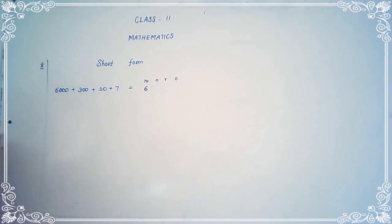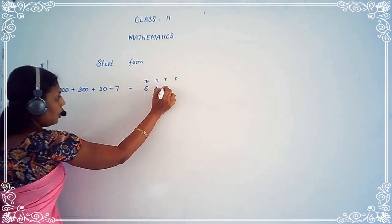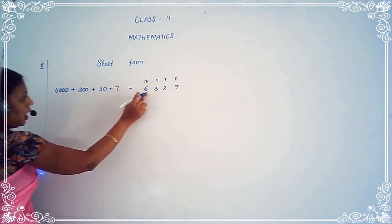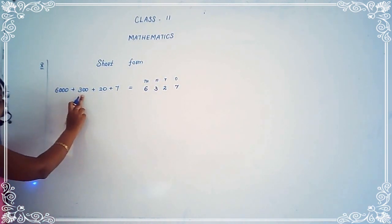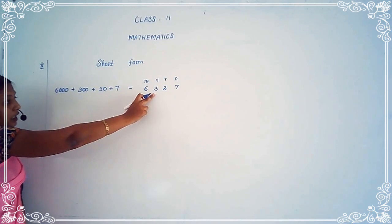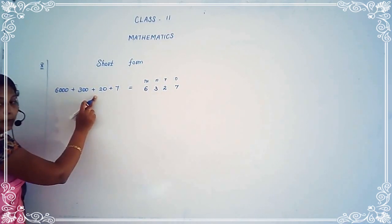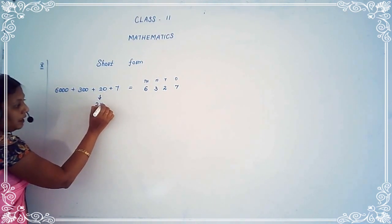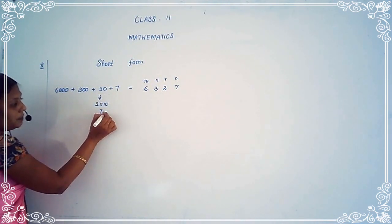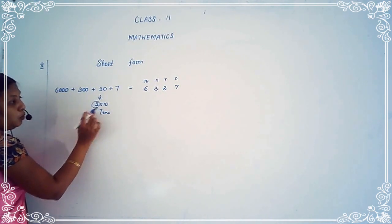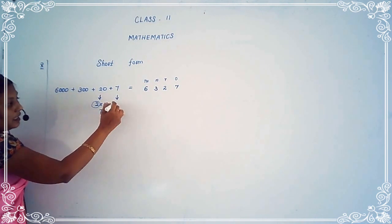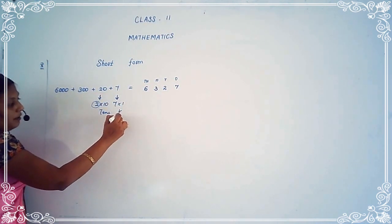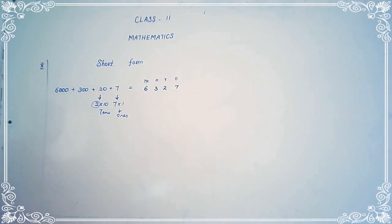How many thousands? Six thousand. Then how many hundreds? Three hundred. How many tens? Two tens. How many ones? Seven ones. Three multiplied by hundred equals three hundred — write three in the hundreds place. Two multiplied by ten equals twenty — write two in the tens place. Seven multiplied by one equals seven — write seven in the ones place.